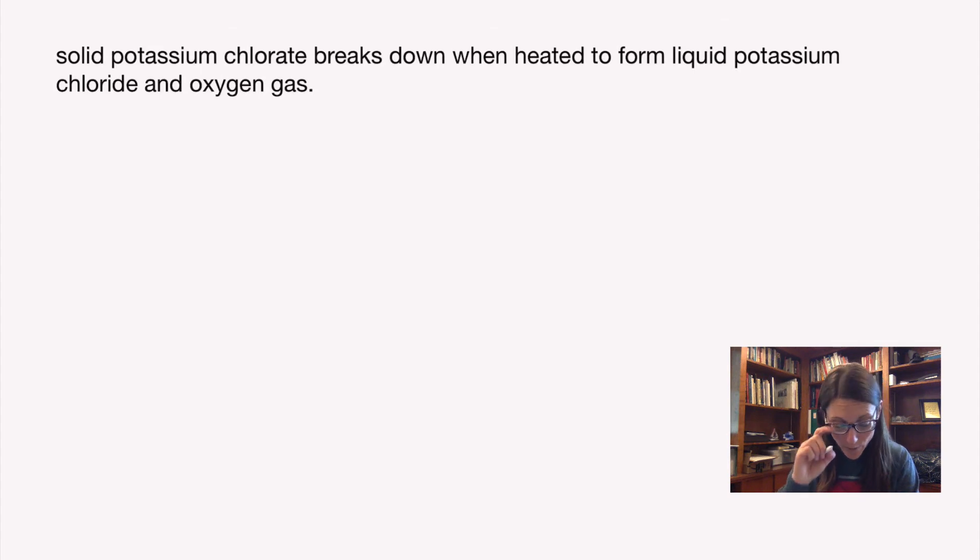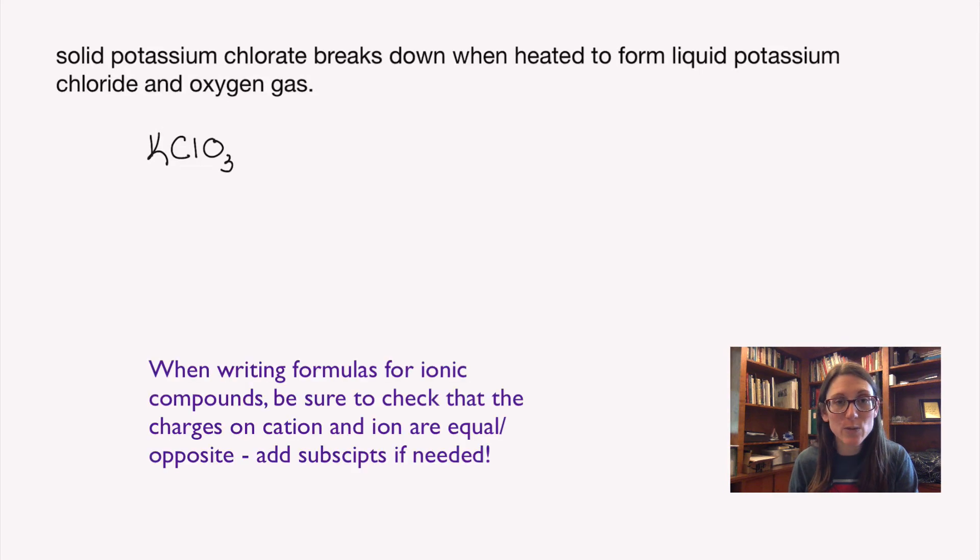Let's look at one last example. We're starting with the word equation and turning it into a formula equation. Solid potassium chlorate—chlorate has a minus one charge, potassium has a plus one charge. I will need one of each, so my formula is KClO3. Then I have this break down to form liquid potassium chloride.